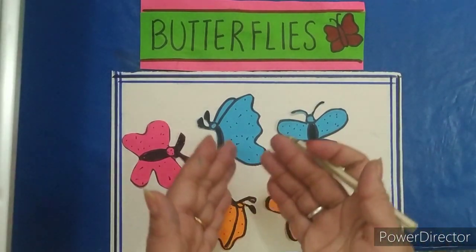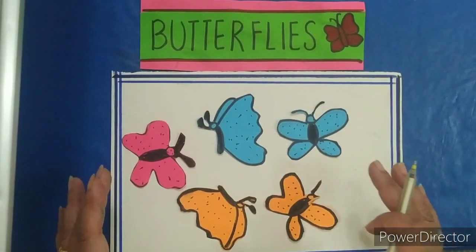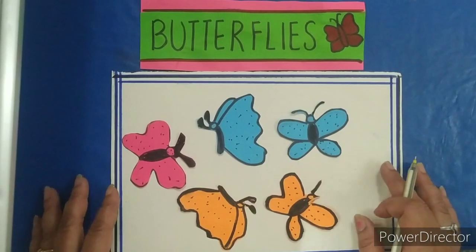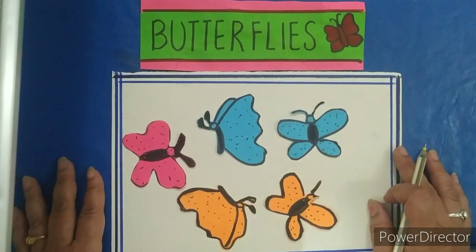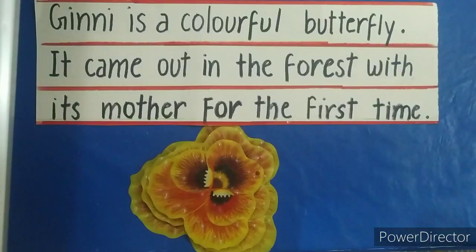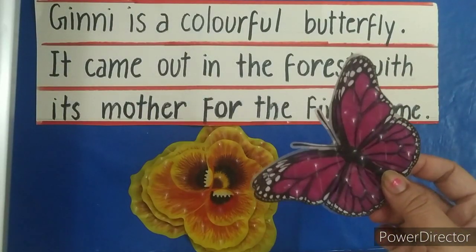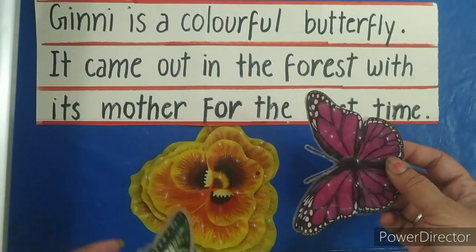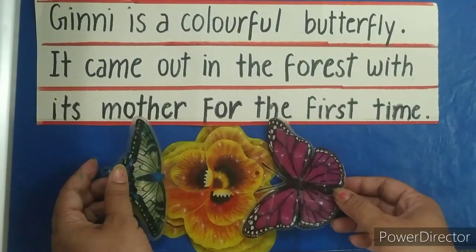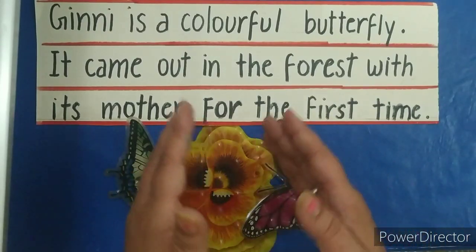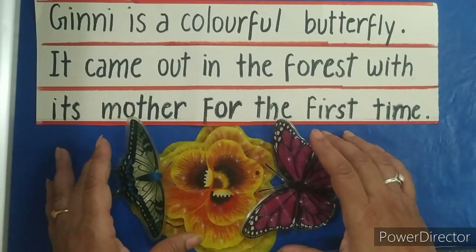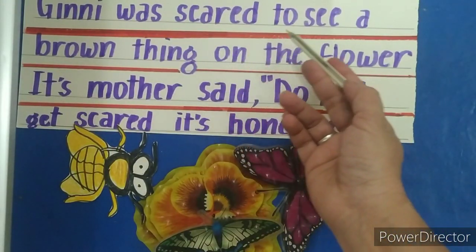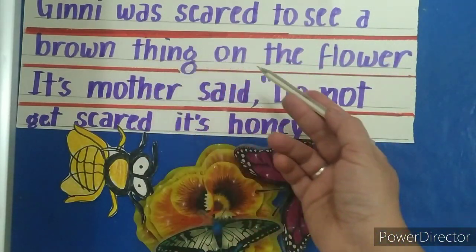Now kids, look at this picture. These are very beautiful butterflies. Let's start our lesson with a beautiful butterfly named Guinny. Guinny is a colorful butterfly. It came out in the forest with its mother for the first time. There are beautiful flowers all around. They both sat on flowers. Guinny was scared to see a brown thing on the flower.